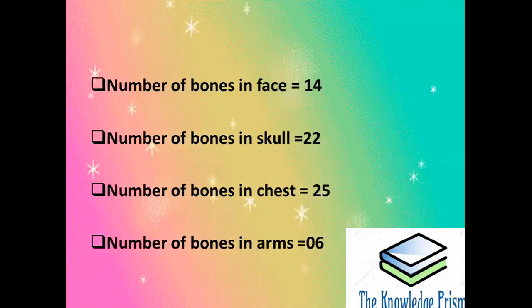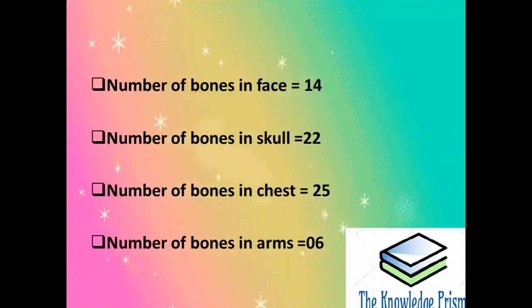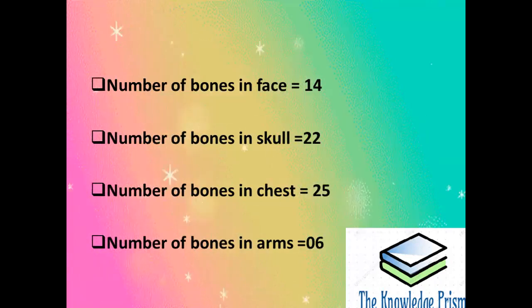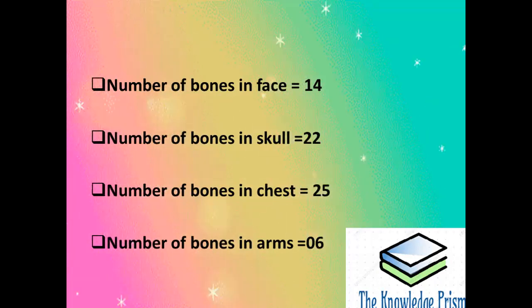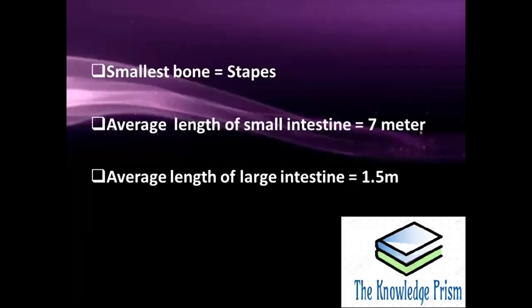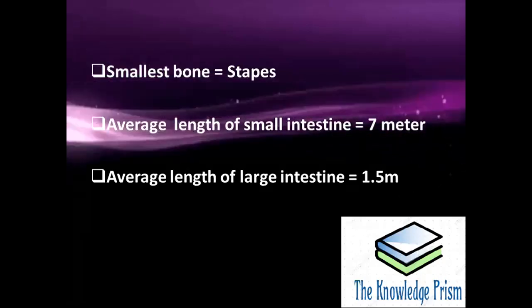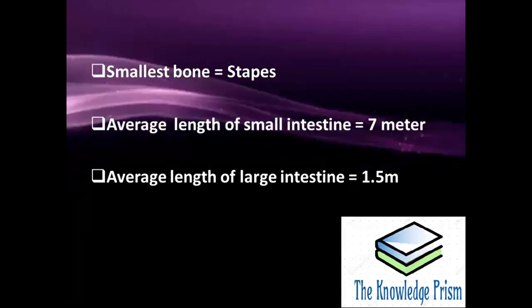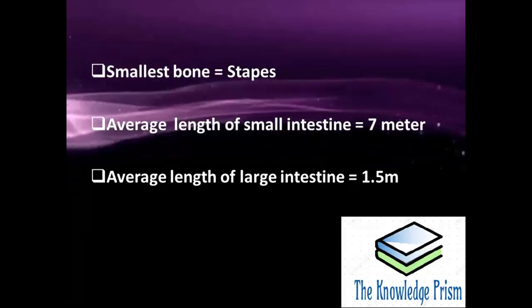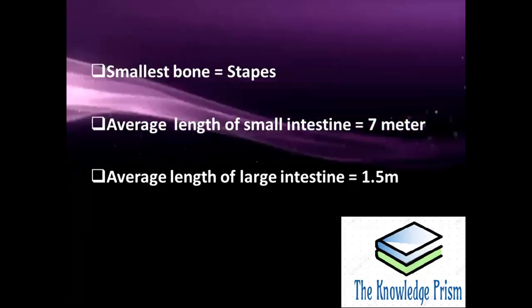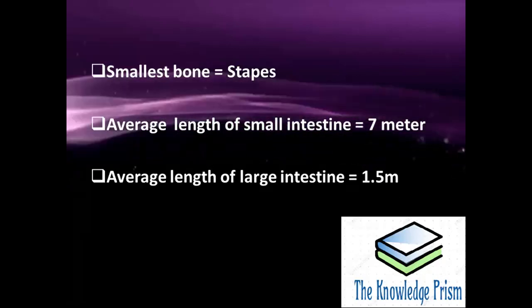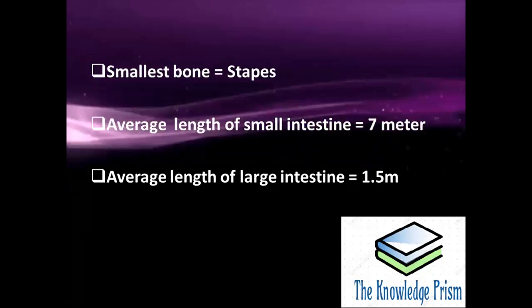Number of bones in chest are 25. Number of bones in arms are 6. The smallest bone in human body is stapes. The average length of small intestine in human body is 7 meters. Average length of large intestine is 1.5 meters.